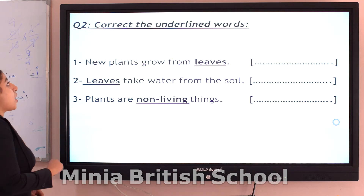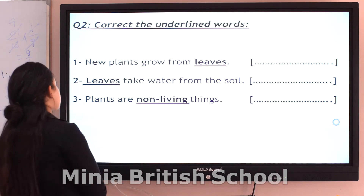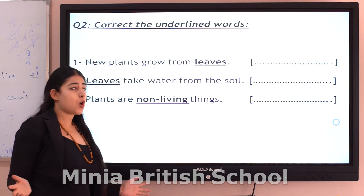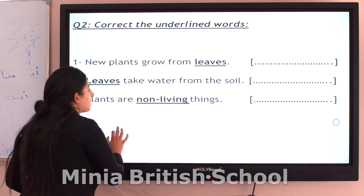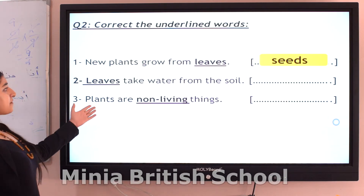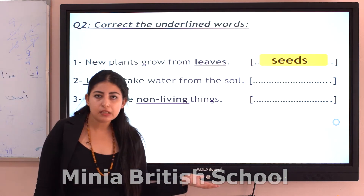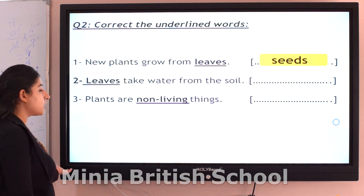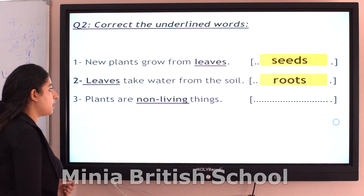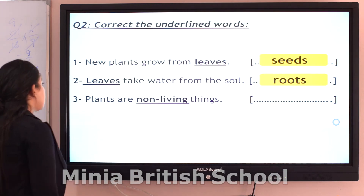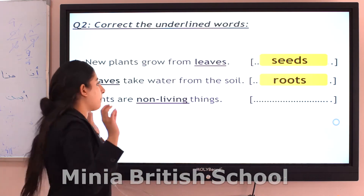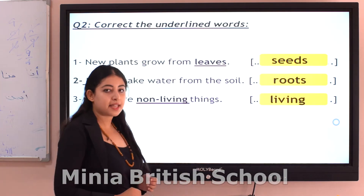Question number two — true or false. Number one: new plants grow from leaves? Of course no — new plants grow from seeds. Number two: leaves take water from the soil? Of course no — roots take water from the soil. Number three: plants are not living things? Of course no — plants are living things.